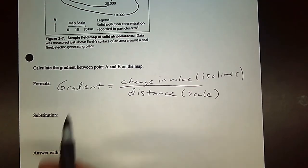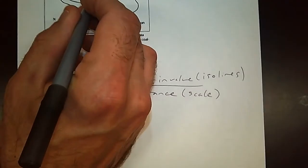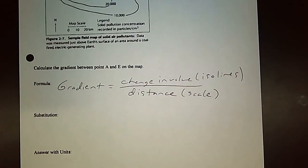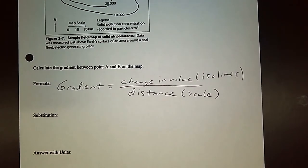All right, so A to E. So A is here, E is here on the map. A quick little way to do this is you're going to grab a piece of paper to find the distance.